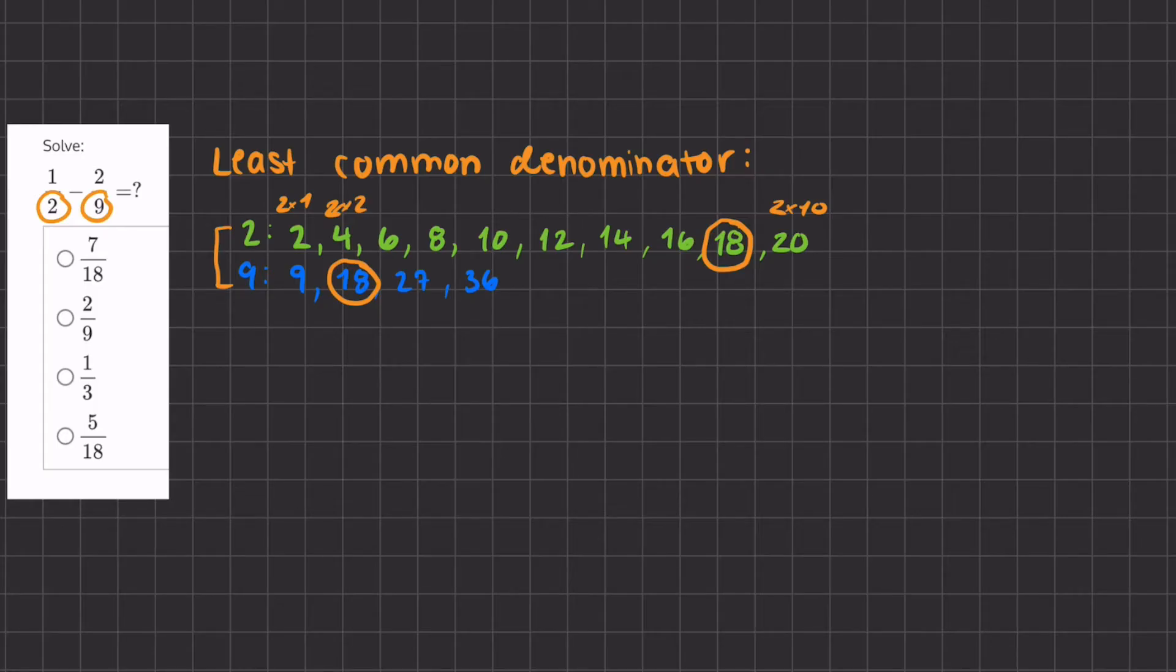Now once I have the number that I'm going to turn into the least common denominator, I can now convert both of the fractions. So we'll take 1 half, and we know that it has to turn into a common denominator of 18.